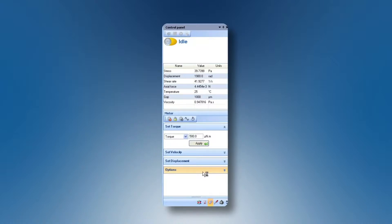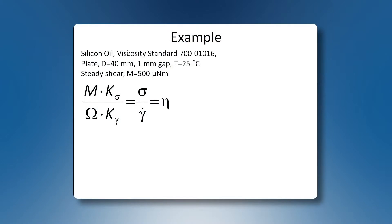So we have seen in TRIOS our set torque was 500 µNm, and we measured a velocity of 2.09 rad per second. If we enter this and combine it with our geometry constants of nearly 80,000 for the stress constant and 20 for the strain constant, we can calculate a stress of 39.8 Pa and a strain rate of 41.8 reciprocal seconds. And this ratio gives us our viscosity of 952 mPa seconds.